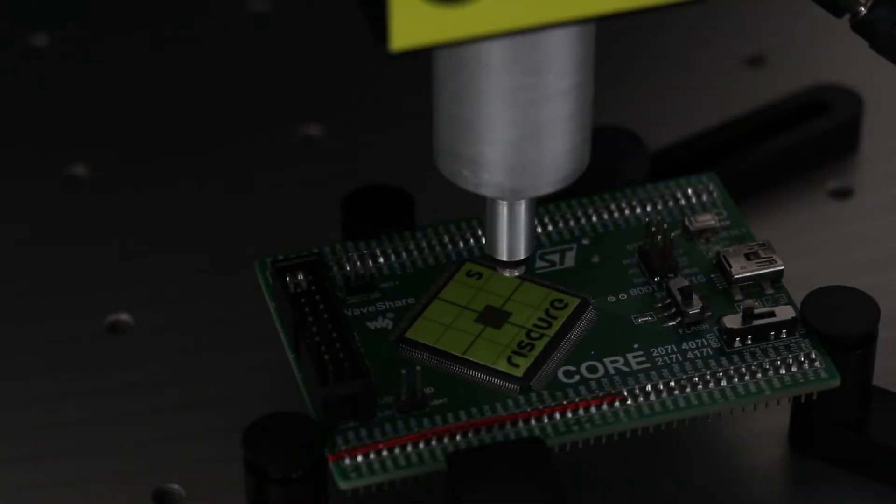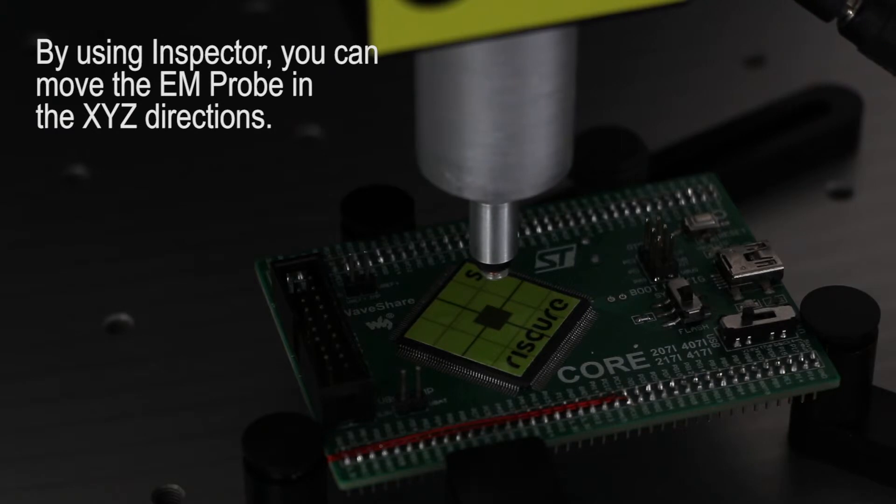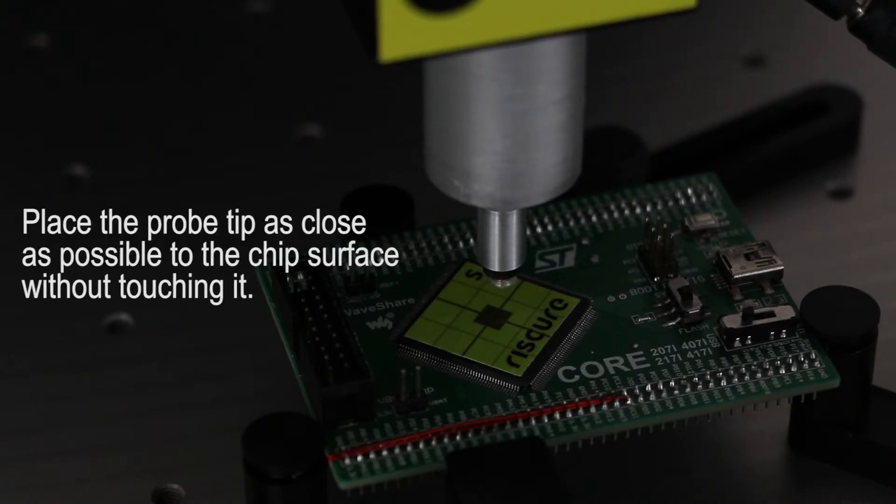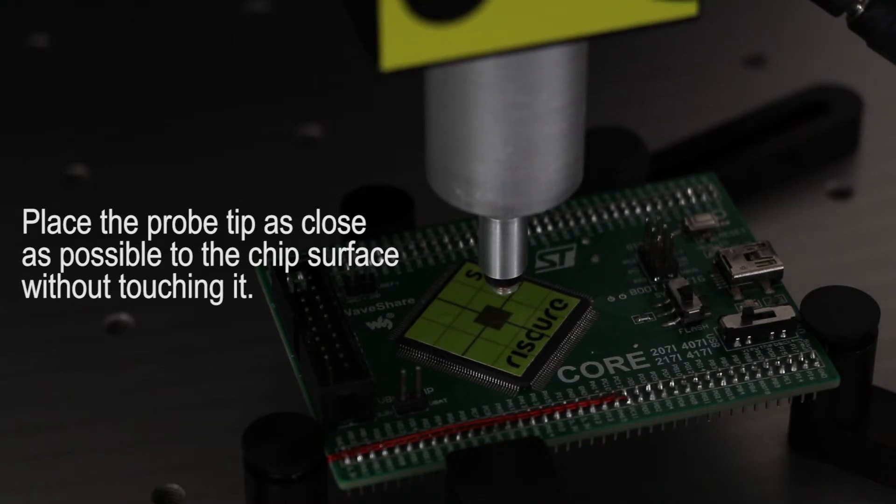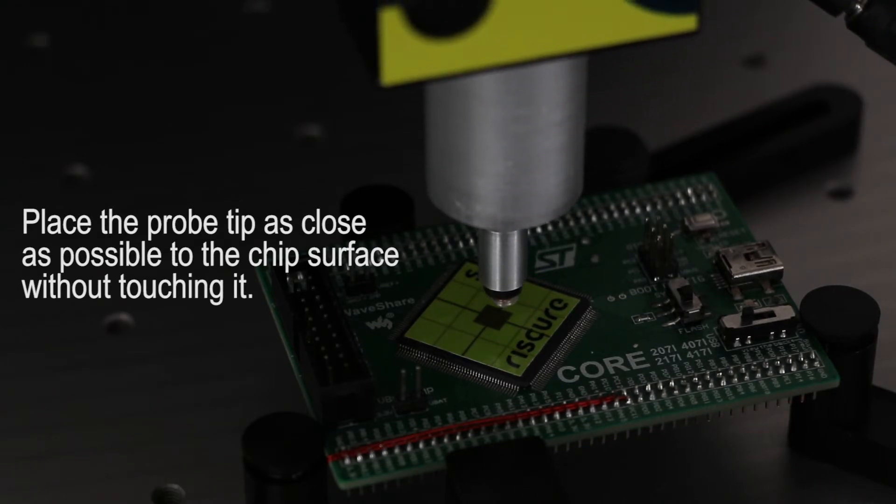In the last step, you need to place the probe to the right spot for your measurements. Use Inspector to move it in three dimensions, but be careful. You must place it as close as possible to the target without touching it.